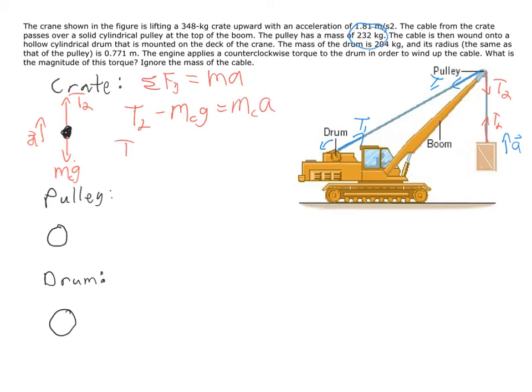While we don't know T2, we can find it by realizing it's going to be equal to ma plus mg for the crate. So we can find T2, because ultimately the problem is asking us what is the torque on this drum. But in order to know the torque on the drum, we need to know T1, and in order to find T1, we have to know T2.